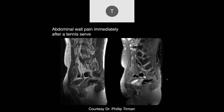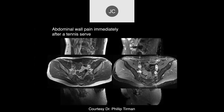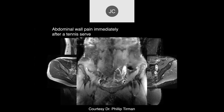Abdominal wall pain immediately after the serve. It looks like there's a fluid collection deep to the rectus abdominis musculature. It has a little bit of high signal intensity rim. The central part of the lesion looks very much like muscle in signal intensity — this is very characteristic of an acute hematoma. You're just starting to get some oxidation of the hemoglobin around the rim. On the coronal plane we can see the nature of the hematoma within the rectus abdominis muscle.